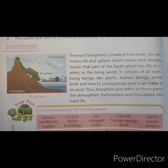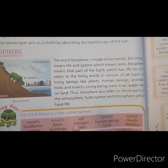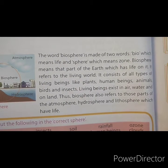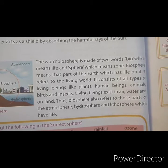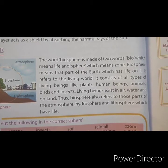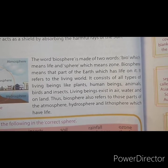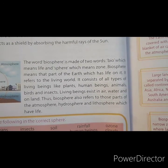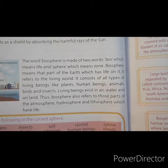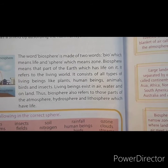Biosphere. The word biosphere is made of two words — bio, which means life, and sphere, which means zone. Biosphere means the part of the earth which has life on it. It refers to the living world and consists of all types of living beings like plants, human beings, animals, birds and insects. Living beings exist in air, water and on land. Thus, biosphere refers to those parts of the atmosphere, hydrosphere and lithosphere which have life.